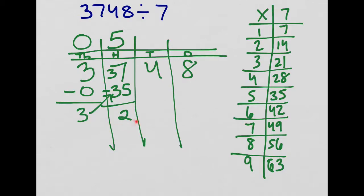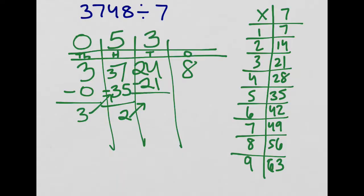I can imagine going to the bank with my two hundreds and saying I'd like to change these $200 bills in for $10 bills. I move them next door into the tens place and now I've got 24 tens. I divide 24 by seven by looking down the table of multiples for the multiple closest to 24 without going over. 28 is too big, but 21 is close without going over. I could use up 21, and if I did I would have enough to make three groups. My groups go on top, the amount I used goes on the bottom, I do my subtracting, and I have three tens left over.